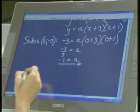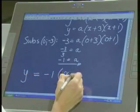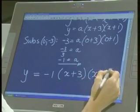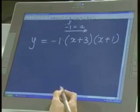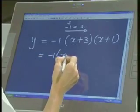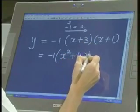So, so far we have the equation is negative 1 multiplied by x plus 3 times x plus 1. And now you need to multiply all that out. Negative 1 into x squared. That's a 3 and a 1 is a 4. And that's a 3.